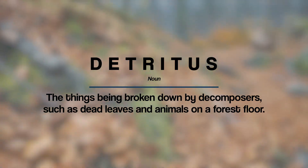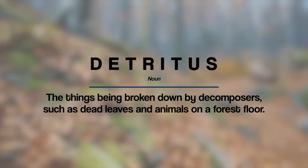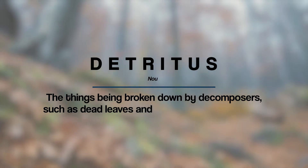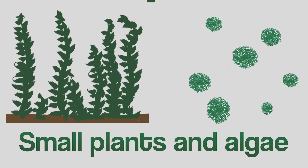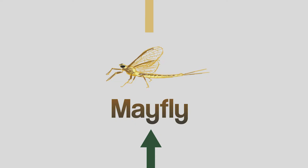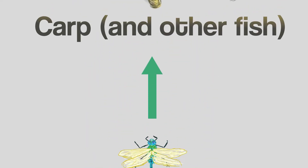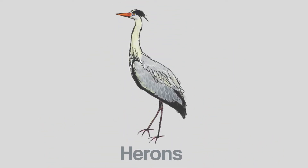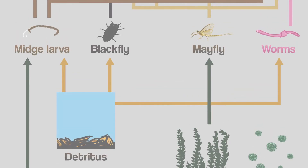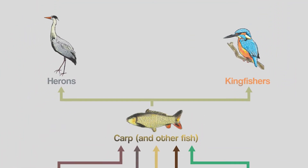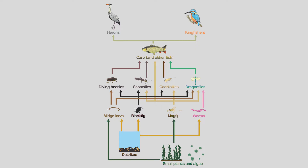Detritus is all the stuff being broken down by decomposers — dead animals, leaves on a forest floor — it's all known as detritus. A food chain is a basic line that shows what eats what in an ecosystem. For example, in a pond, small plants and algae get energy from the sun, are eaten by mayflies, which are eaten by dragonflies, which are eaten by a carp (a type of fish), which is eaten by a heron. A food web is like a food chain but shows a whole variety of biotic components in one diagram — it's a big picture of lots of different food chains all shown at once.